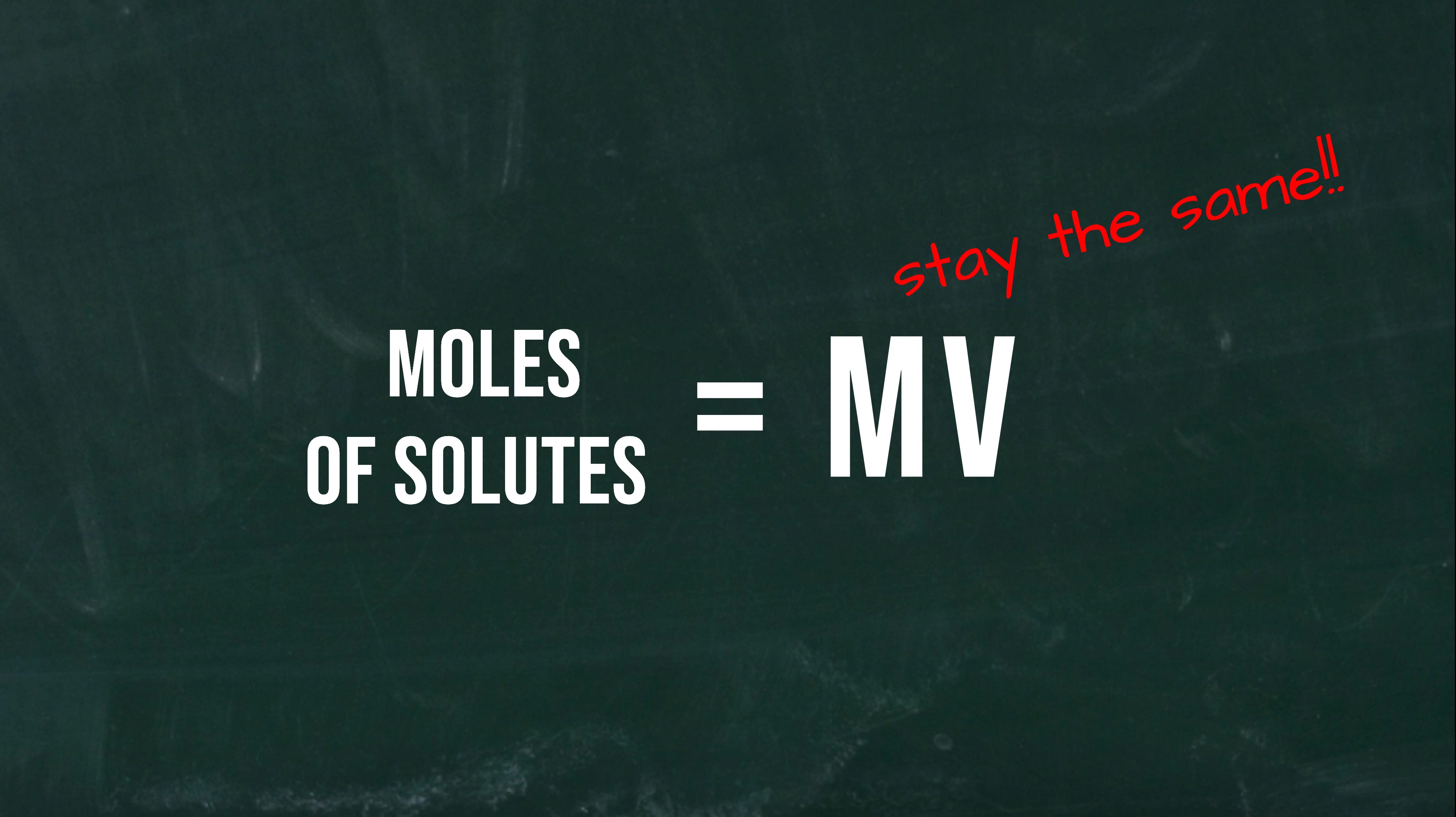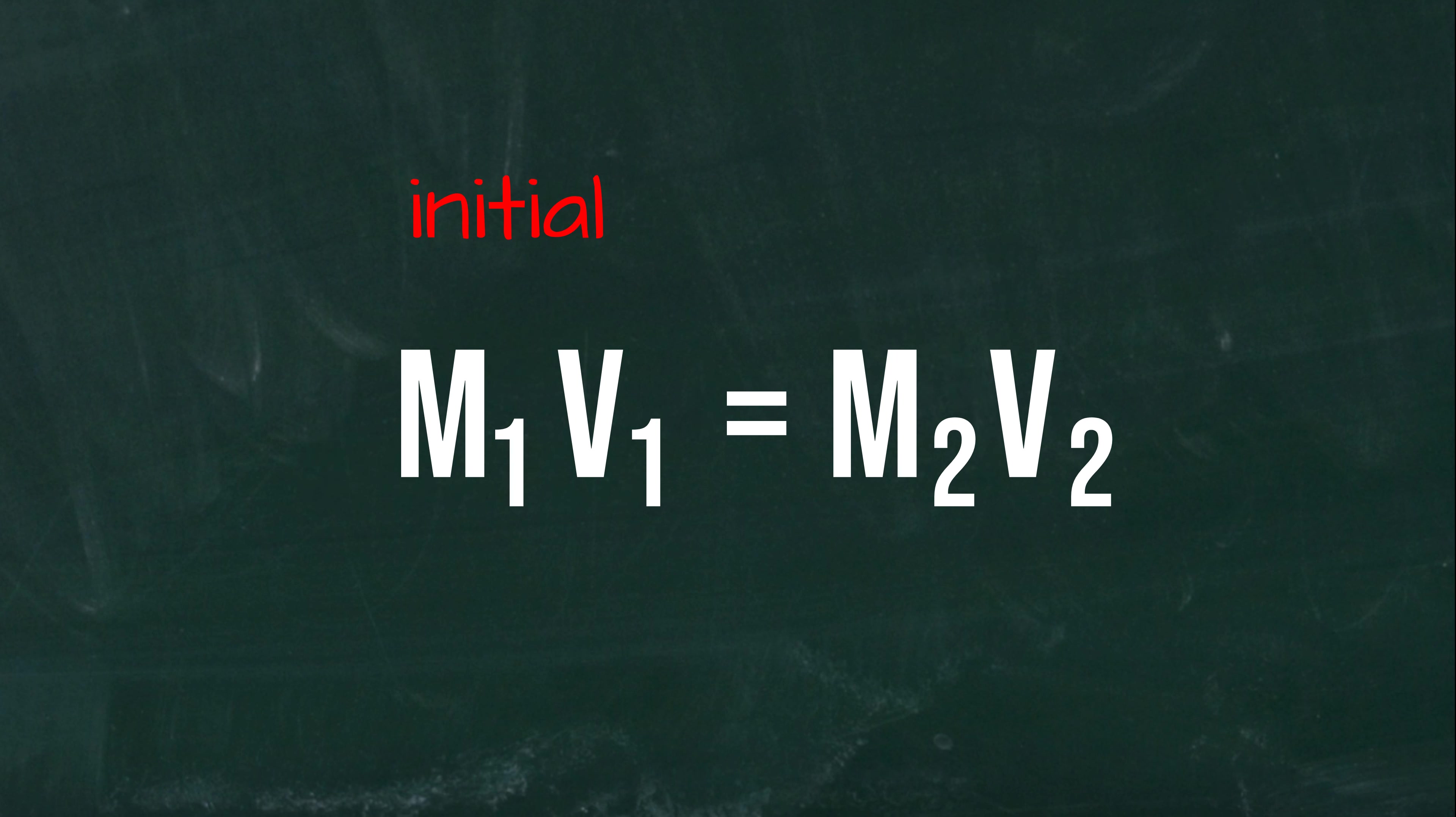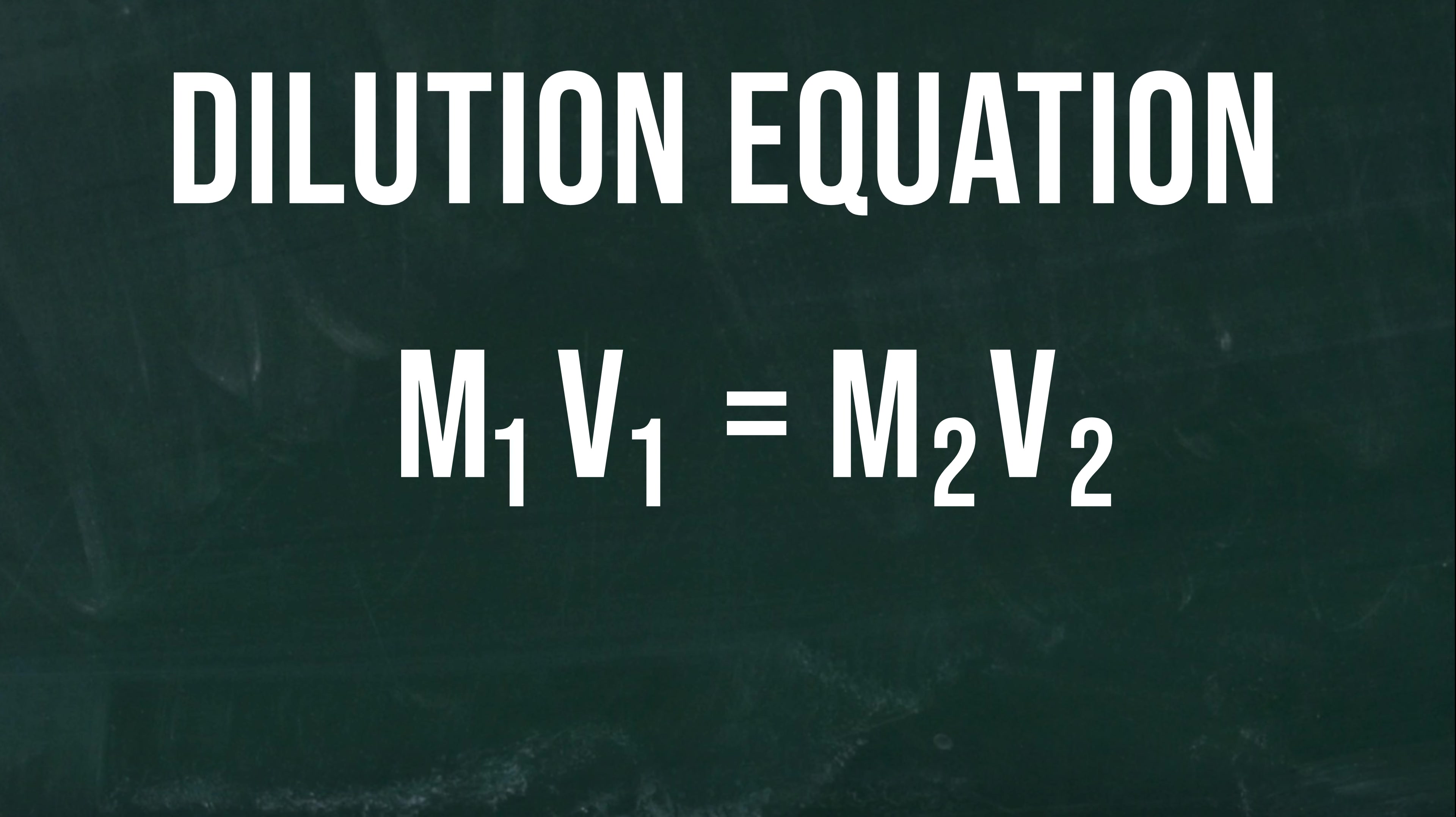Using numbers 1 and 2 to represent the initial and final conditions, we have the following equation. M1 V1 equals M2 V2, also known as the dilution equation.